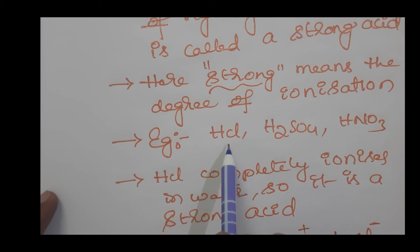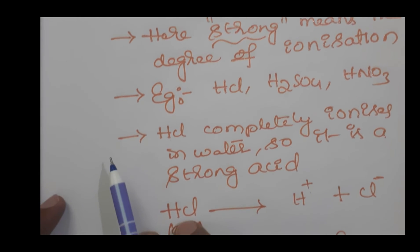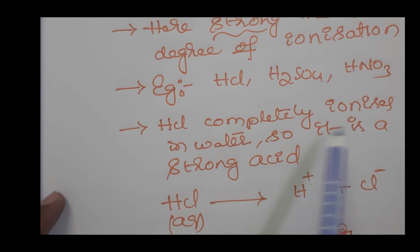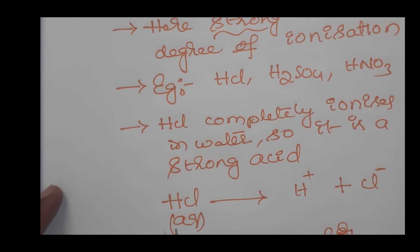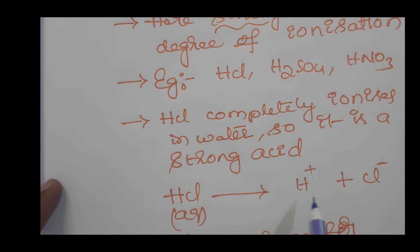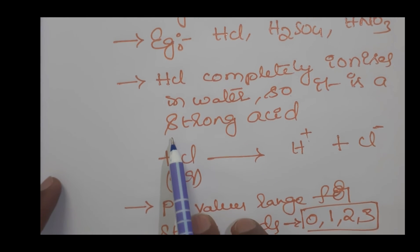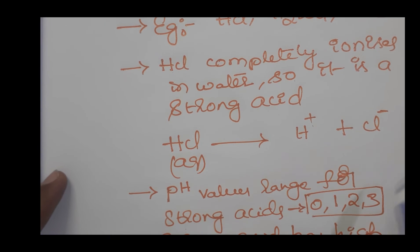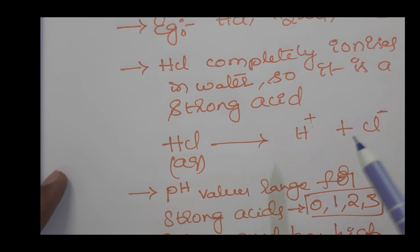Examples of strong acids include hydrochloric acid (HCl), sulfuric acid (H2SO4), and nitric acid (HNO3). HCl completely ionizes in water, so it is a strong acid. In aqueous solution, when HCl is added to water, all HCl molecules split into H+ and Cl- ions.